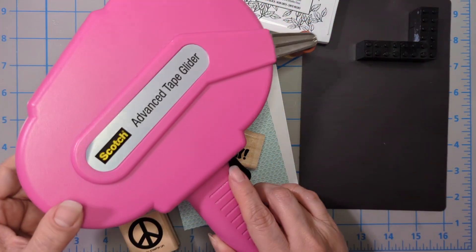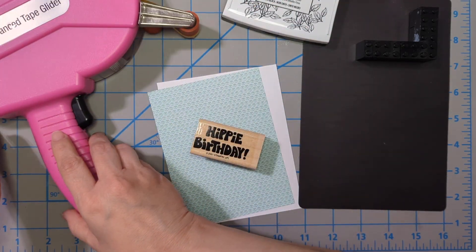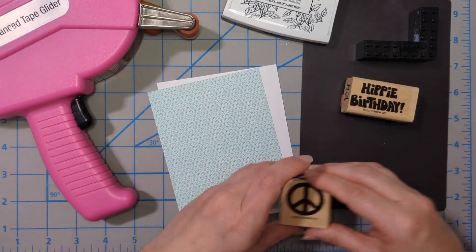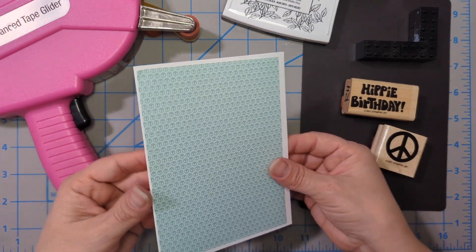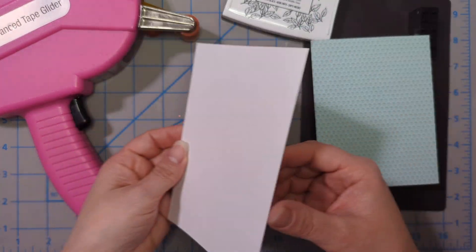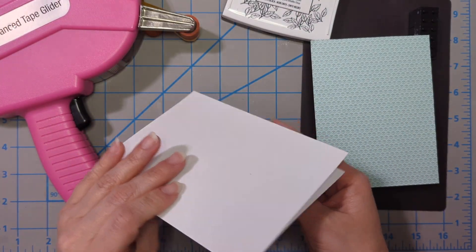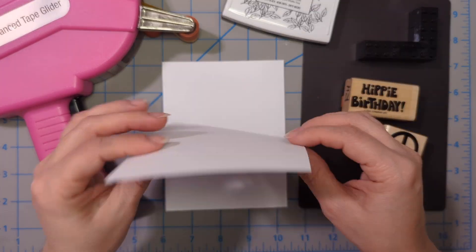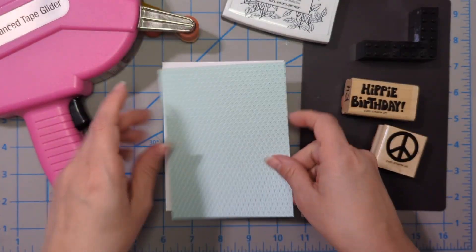I'm gonna be using my ATG gun for this. The paper I'm using is from a cheaper paper pad and it is super thin. So it's got some cute peace signs on it and then I have my A2 card base already cut out. This paper is just cut down to be about an eighth of an inch smaller.